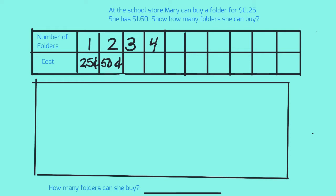So we know she can buy one folder for 25 cents, two for fifty, three for... how much? Get ready... yes, 75 cents. How much would it cost for four folders?